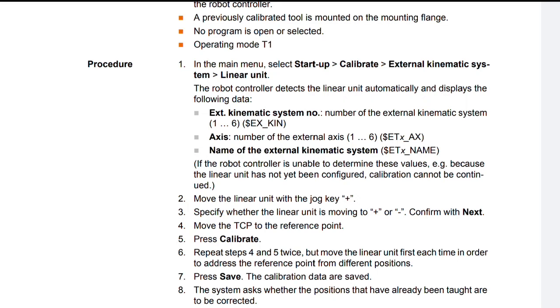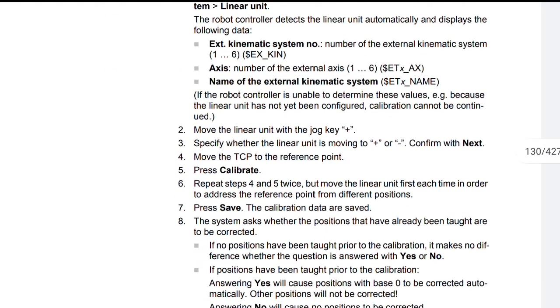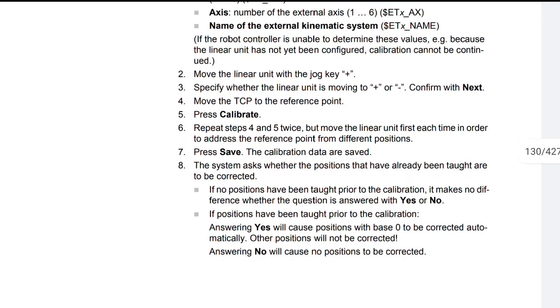Repeat steps 4 and 5 twice, but move the linear unit first each time in order to address the reference point from different positions. Press Save. The calibration data are saved. The system asks whether the positions that have already been taught are to be corrected.